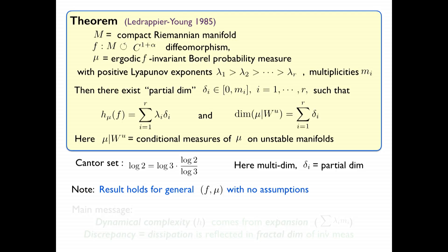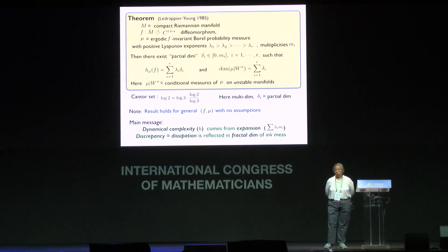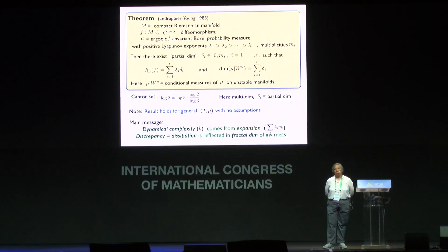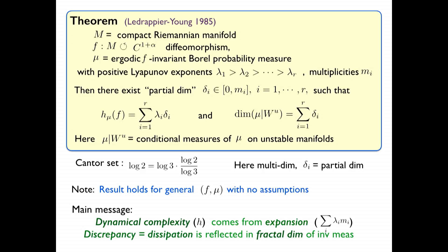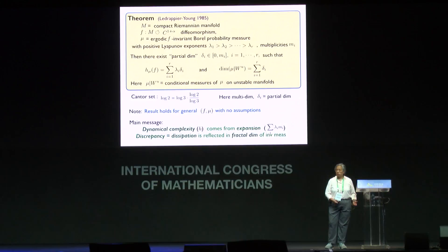The main message: total expansion is given by the sum of lambda_i times m_i — all positive Lyapunov exponents multiplied by their multiplicities. Entropy is dynamical complexity. This result says entropy is often smaller than the total expansion in the system — there is less complexity than the total expansion. The discrepancy can be seen as a form of dissipation, reflected in the fractal dimension of the invariant measure. There's expansion which creates instability, there's dynamical complexity, and the discrepancy between the two is measured by the fractal dimension of the invariant measure. That is result number one.